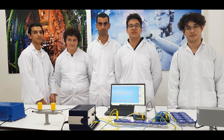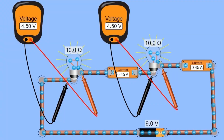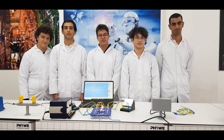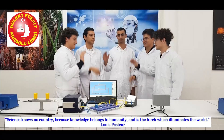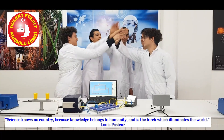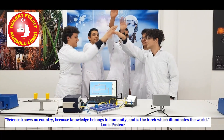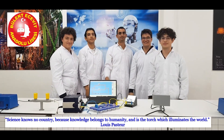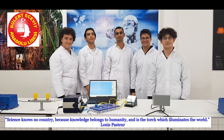If bulbs are connected in series, the total voltage is equal to the sum of the voltage across each component. On the other hand, when bulbs are connected in parallel, all the voltages across them are equal.